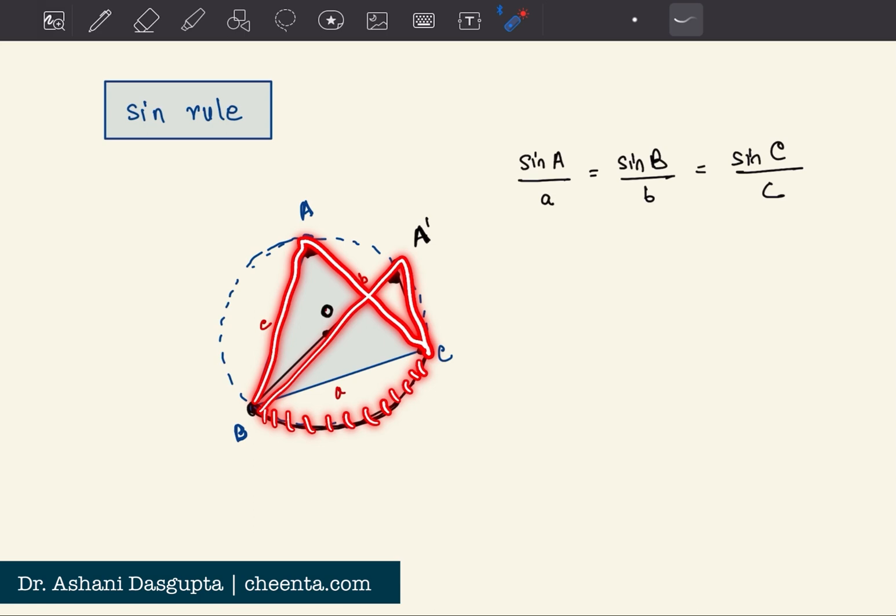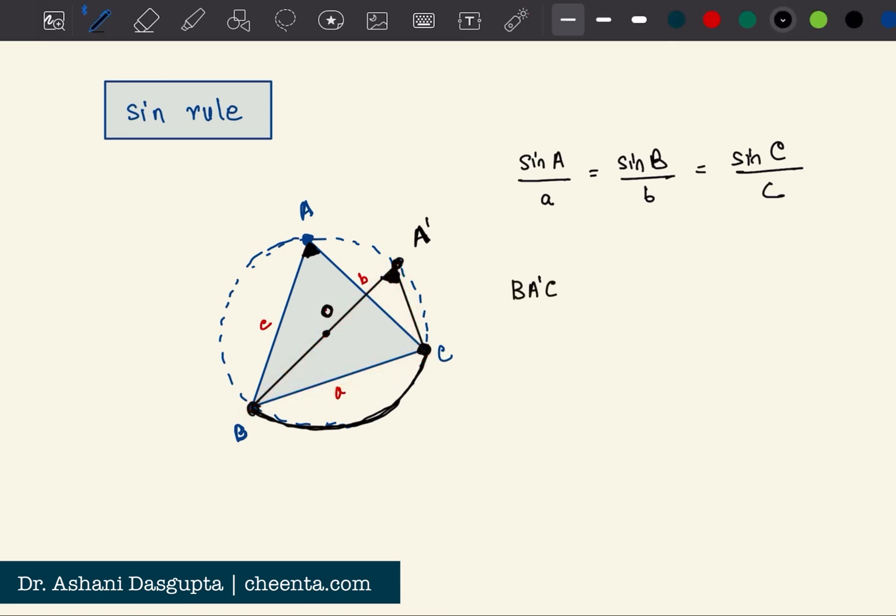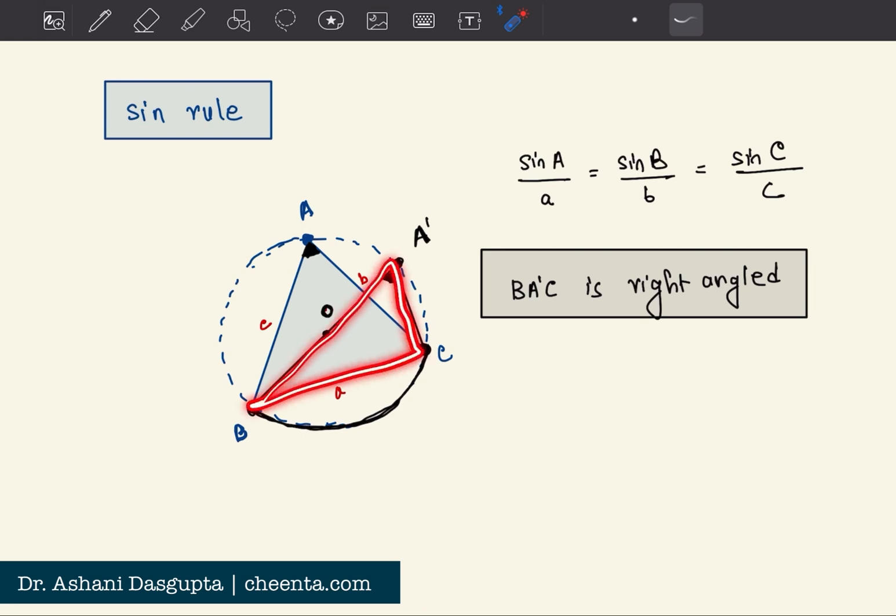The second thing you can observe is that triangle BA prime C is right angled. So can anyone in the comments section tell me why is angle BA prime C right angled at angle C? This angle right here is 90 degrees. So I will not tell you why, you can tell me in the comments why that is true.